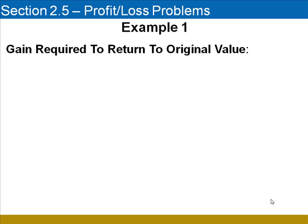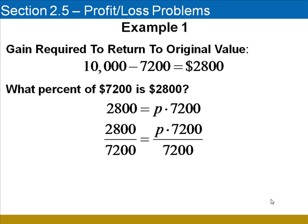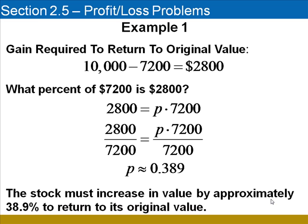In order for the stock to return to its original value, it must increase in value by $2,800, subtracting its current value from the original value. We now need to determine what percent of $7,200 is $2,800. Set up a percent equation with the amount equal to the percent times the base. Recall that in percent increase or decrease problems, the original amount is always the base — in this case, $7,200. Dividing both sides by $7,200, we see that P is approximately 0.389, meaning the stock must increase in value by approximately 38.9% in order to return to its original value.